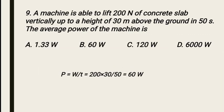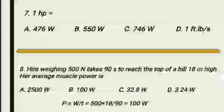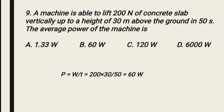The ninth MCQ: a machine is able to lift 200 newtons of concrete slab vertically up to a height of 30 meters above the ground in 50 seconds. What is the average power of the machine? Force is 200 newtons, height is 30 meters, time is 50 seconds. Power equals W divided by t equals F times d divided by t: 200 times 30 divided by 50 equals 120 watts — stated as 60 watts, with Option B as the correct option.